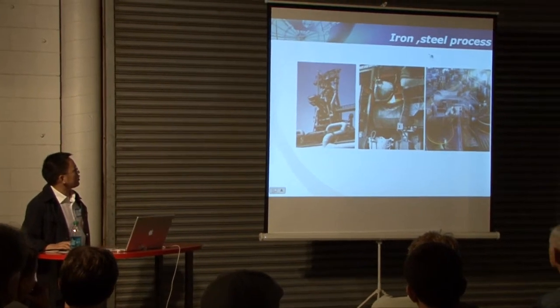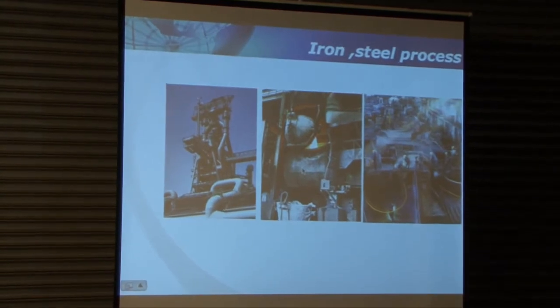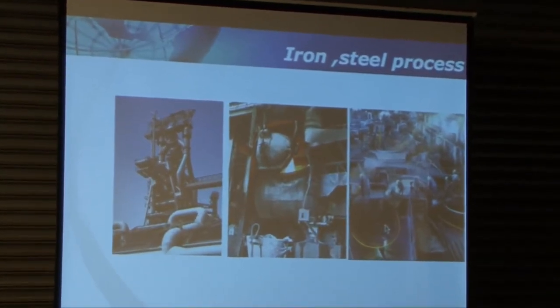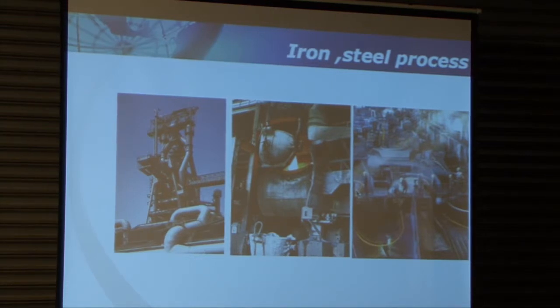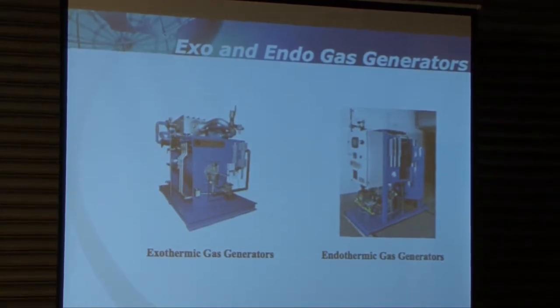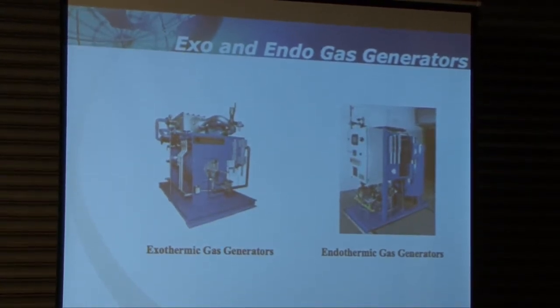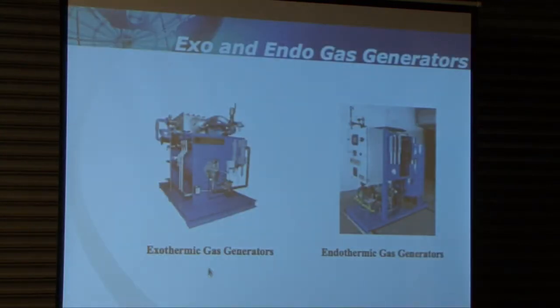Another one, reducing gas is from the iron steel process, such as the blast furnace, the converter, and other iron steel processes. The gas is also CO, CO2, CH4, H2, O2 and so on. The first one, the reduced gas is the gas generator. This kind of machine was used for heat treating, for furnace heat treating.